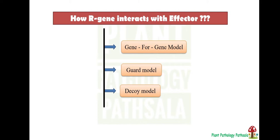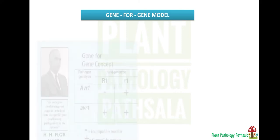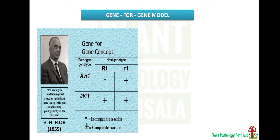The first model is the gene for gene model, also known as the Flor hypothesis. This was given by H.S. Flor in 1955. He was the first plant pathologist to analyze the plant-pathogen interaction at the genetic level while working on linseed rust fungi — that is Melampsora lini.